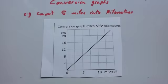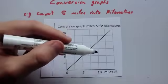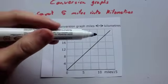Other types of conversion graphs sometimes include currency, for instance, pounds into dollars or pounds into euros. Let's have a look at an example. Convert five miles into kilometers. And they've given you a conversion graph to use for that.